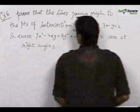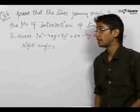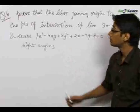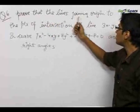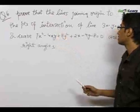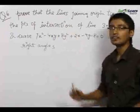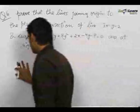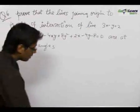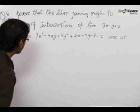This is the most important question of the chapter on pair of straight lines. This involves the homogenization concept. We have to prove that the lines joining the origin to the points of intersection of a given line with a given curve are at right angle. For solving this problem, let us first have a look at what the homogenization concept is.